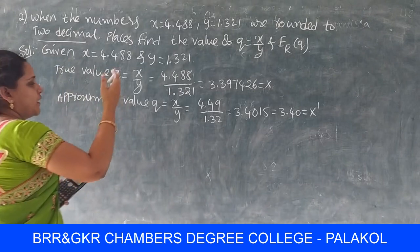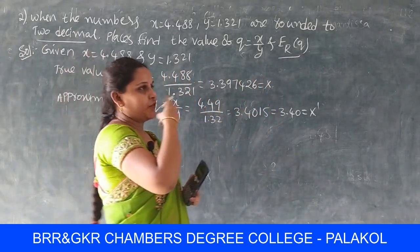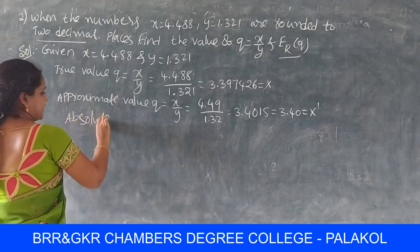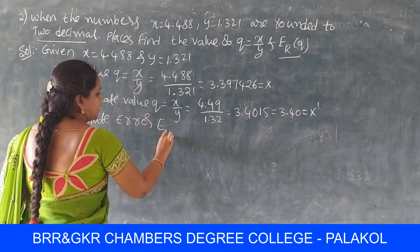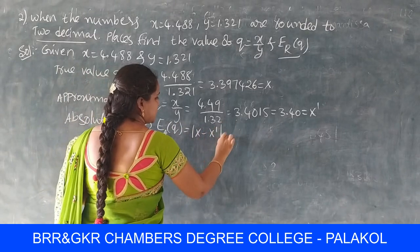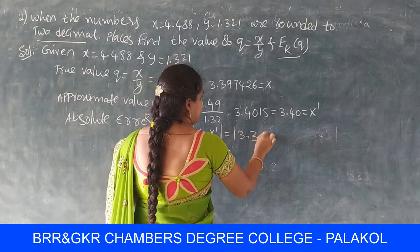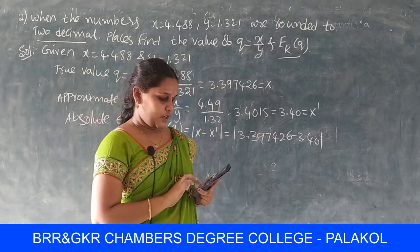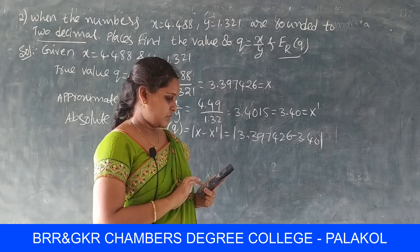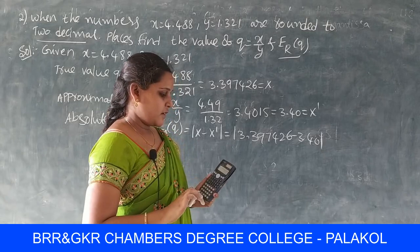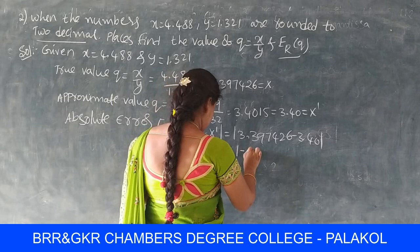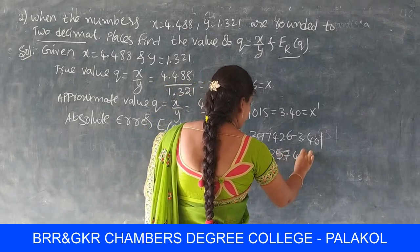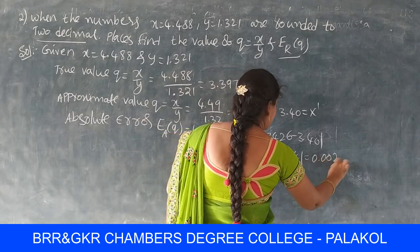Now find the relative error ER of q. First, compute the absolute error. Absolute error Ea of q = |X − X'| = |3.397426 − 3.40|. Simplifying: 3.397426 − 3.40 = −0.002574. Since modulus is always positive, the absolute error is 0.002574.